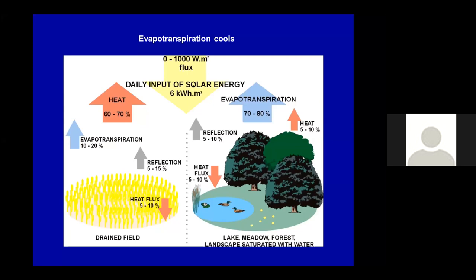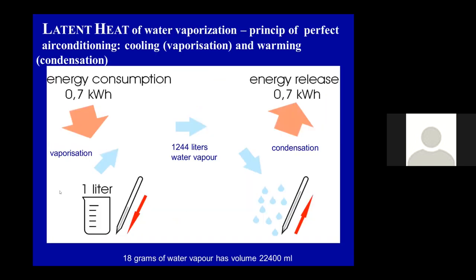On the left-hand side there is a drained field or pavement; on the right-hand side there is a cultural landscape with plants, water, and so on. We are getting up to 1000 watts per square meter of sunshine. Dry land heats up, temperature increases, air heats from the dry land and hot air goes up. If solar energy goes to a landscape with water and plants, most of the energy is used for evaporation — evapotranspiration — and it is conserved in the water vapor, so the land is then cooler.